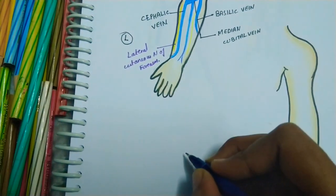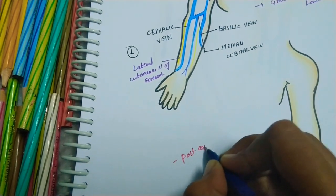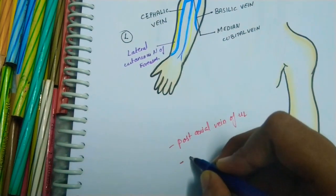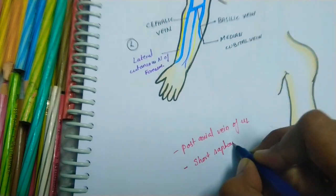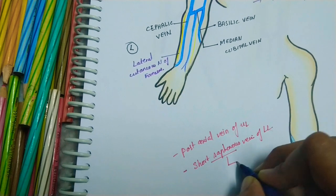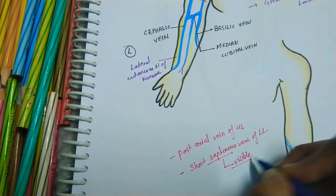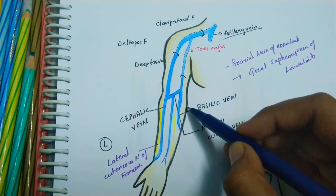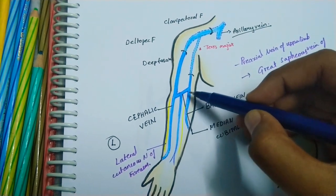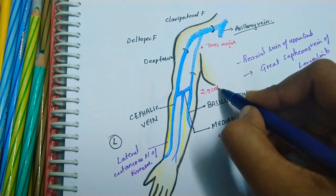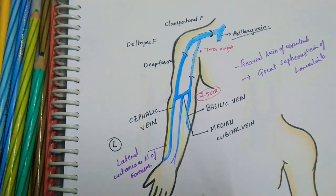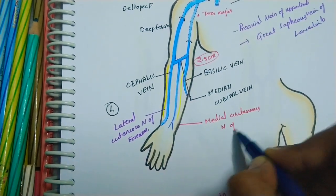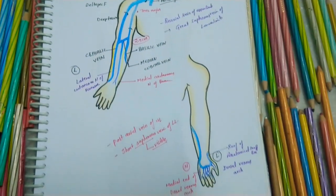It then joins the axillary vein at the lower border of the teres major muscle. The basilic vein is the post-axial vein of the upper limb and corresponds to the short saphenous vein of the lower limb — 'saphenous' meaning visible. About 2.5 cm above the medial epicondyle of the humerus, it is joined by the medial cubital vein. It is accompanied by the medial cutaneous nerve of the forearm.